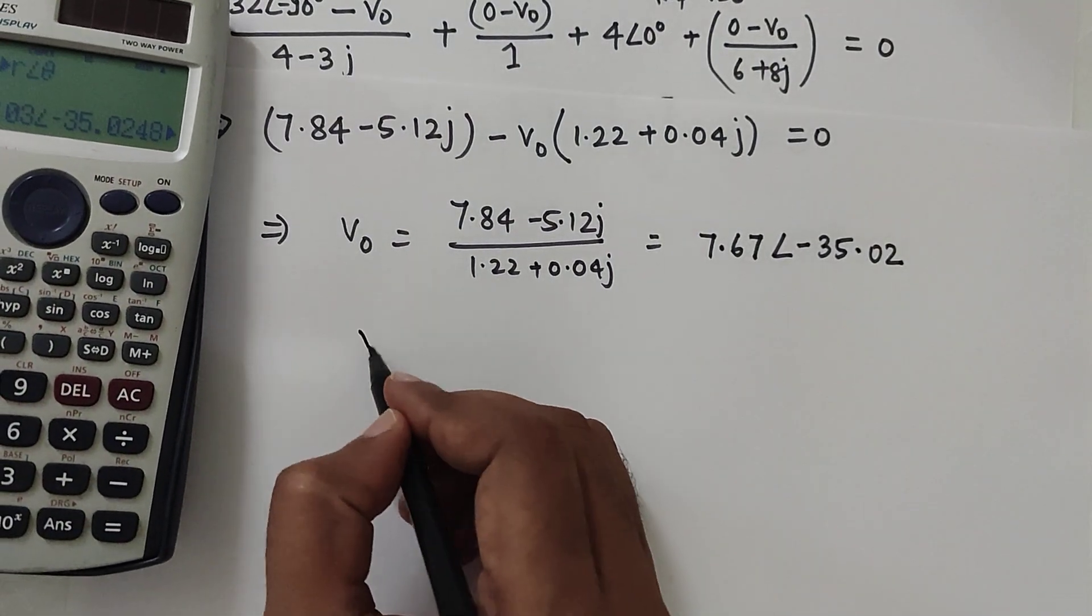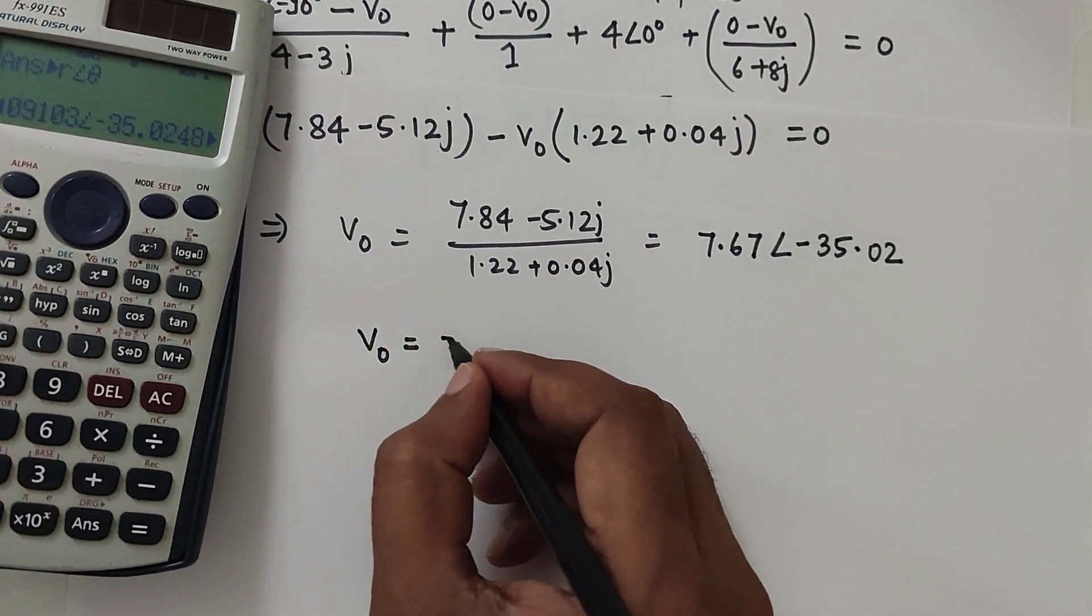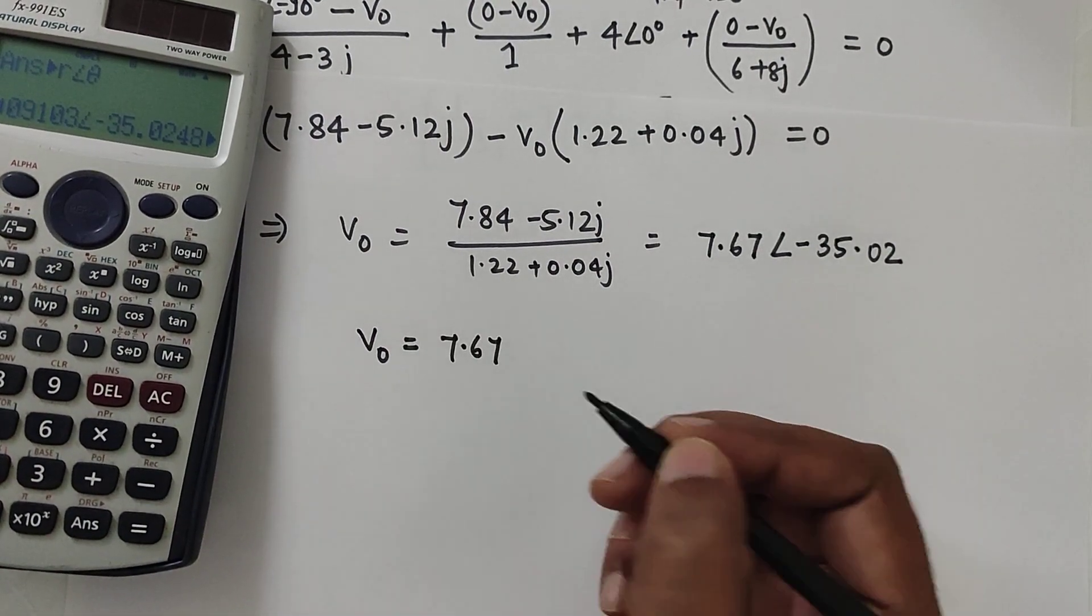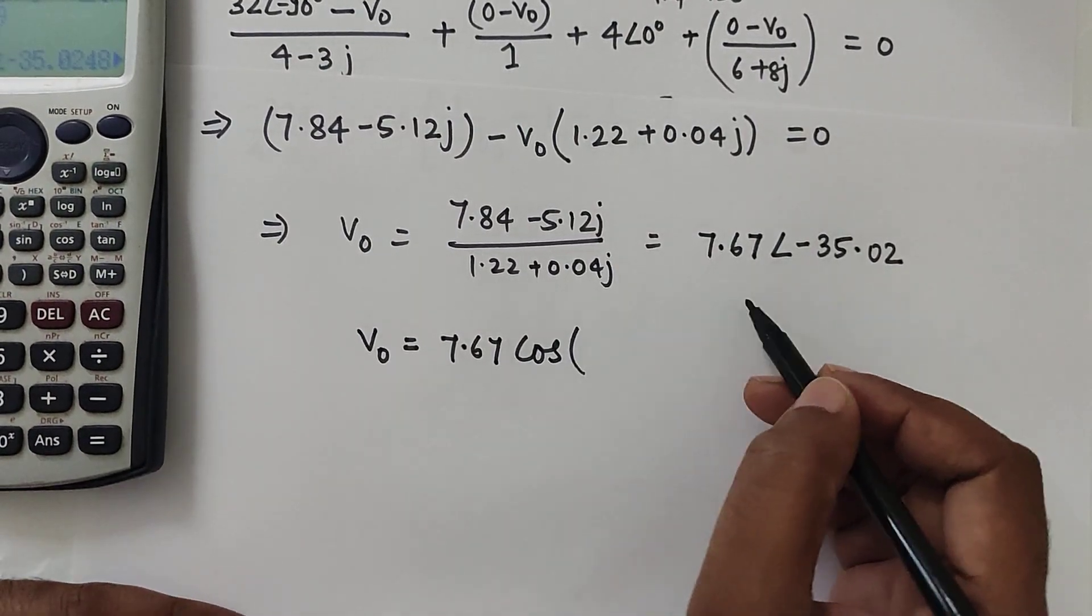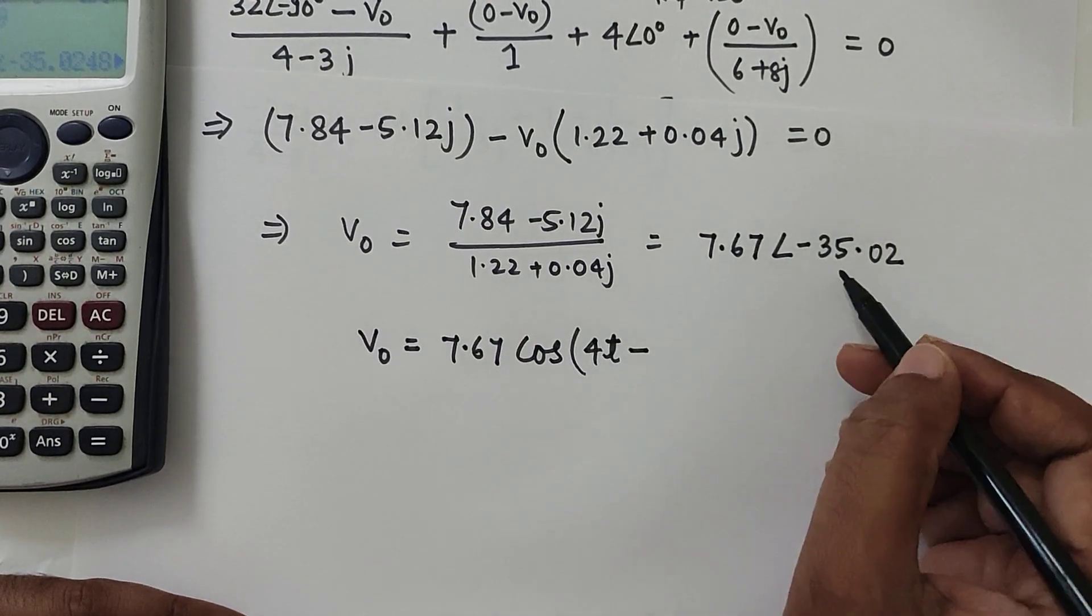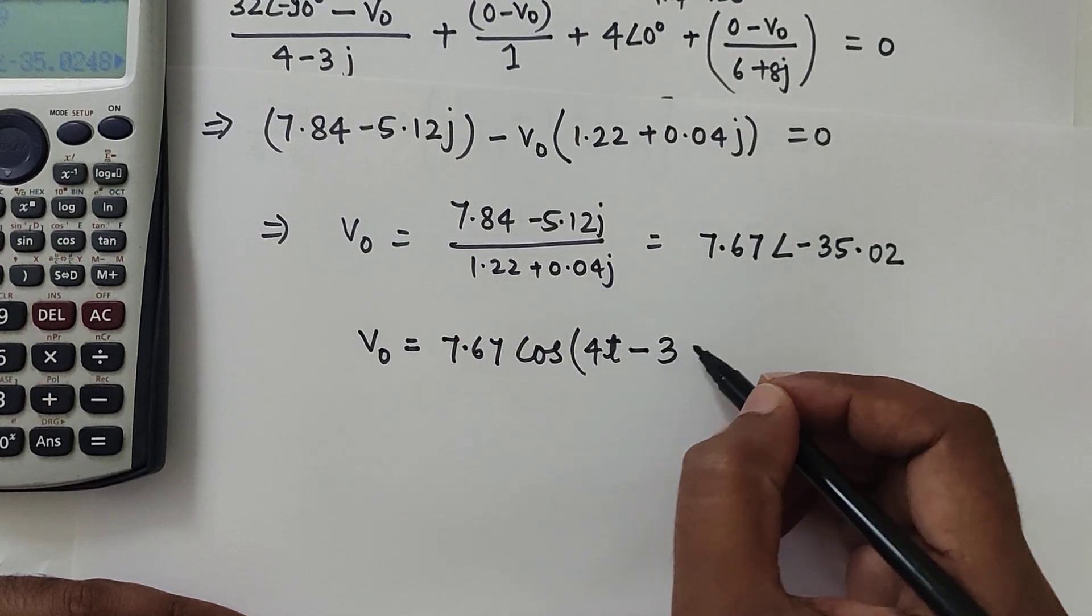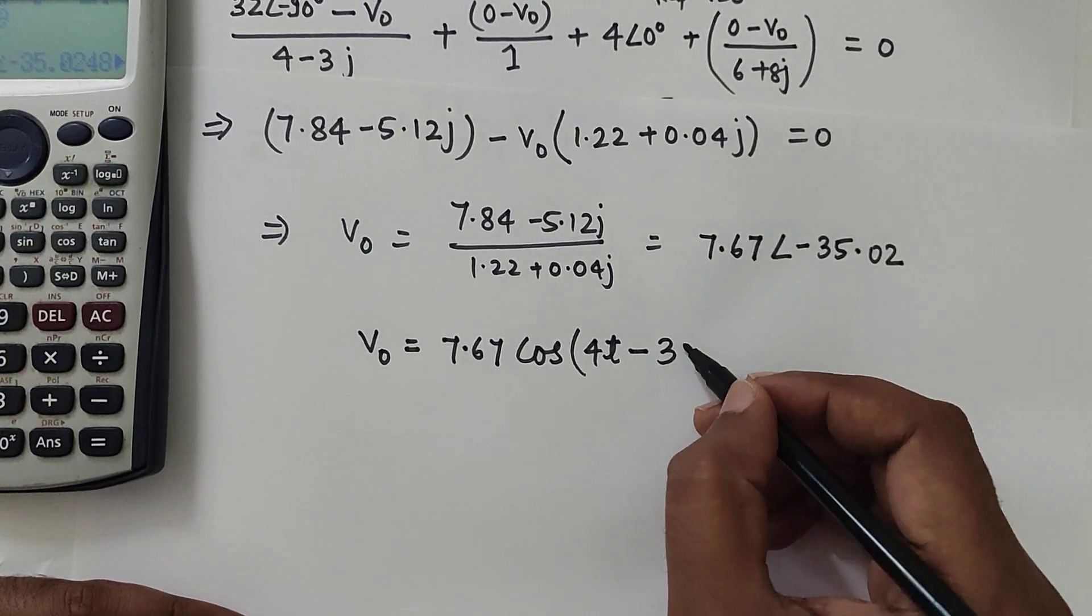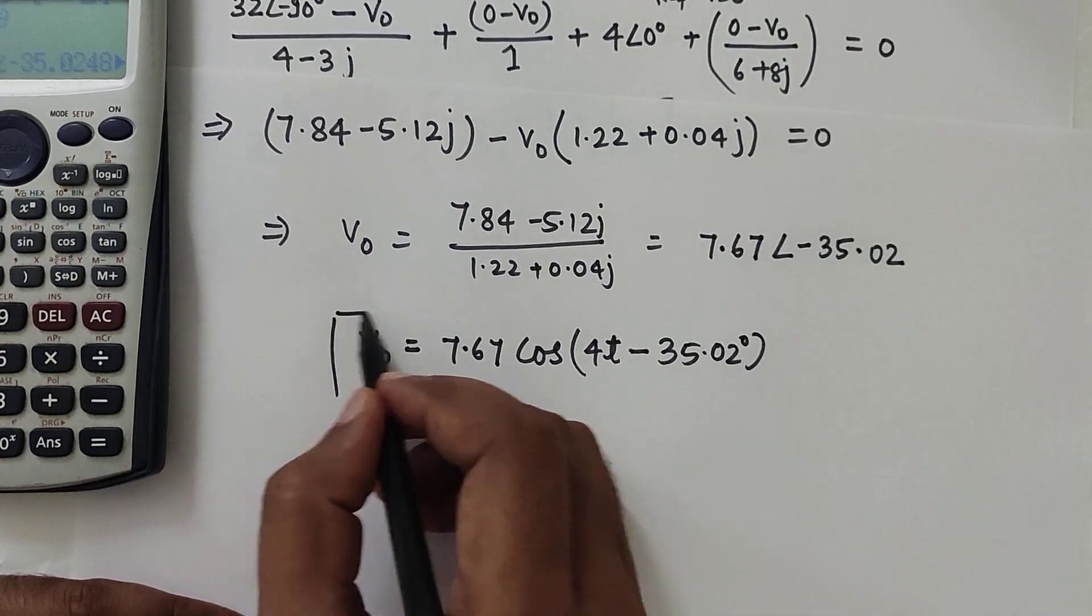So V0 can be written as, while converting back to time domain, magnitude is 7.67, then we can write cos omega t, omega was 4, so 4t minus angle 35.02. So omega t plus phi. So angle is minus 35.02 degrees. So this will be your answer. Thank you.